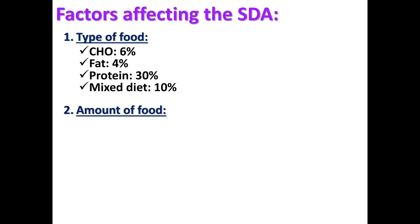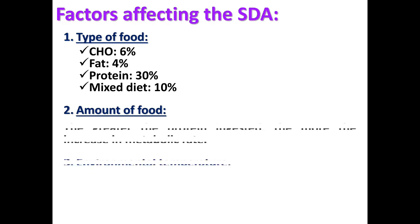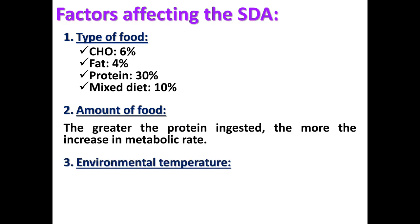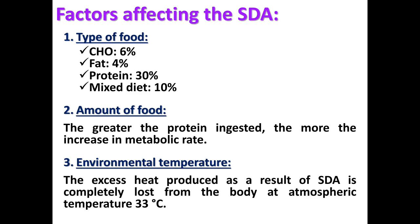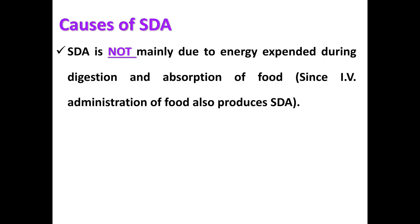Factors affecting SDA: First, type of food — carbohydrate increases SDA by 6%, fat by 4%, protein by 30%, and mixed diet by 10%. Second, amount of food — the greater the protein ingested, the more the increase in metabolic rate. Third, environmental temperature — excess heat produced as a result of SDA is completely lost from the body at an atmospheric temperature of 33 degrees centigrade.